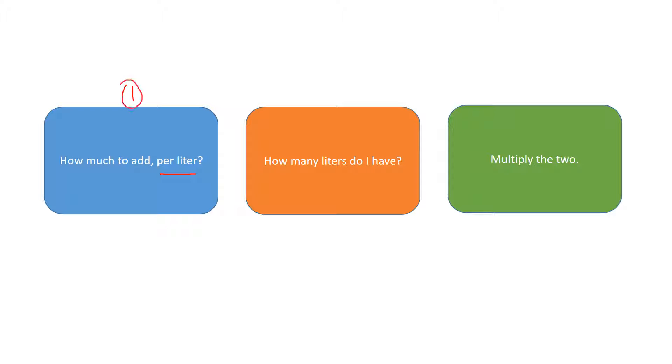Second thing is how many liters do I have? So how big is my tank or how big is my carboy? And then all you got to do is multiply how much to add per liter by the number of liters and you've got your answer. So it's really that simple.